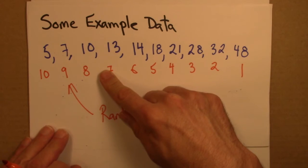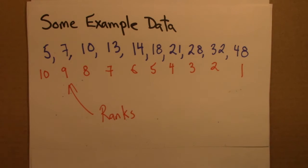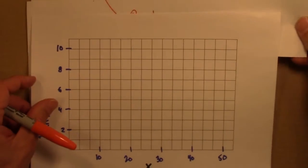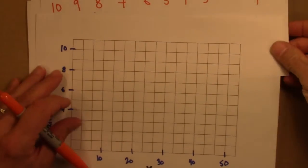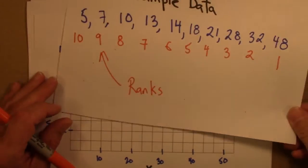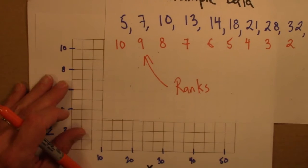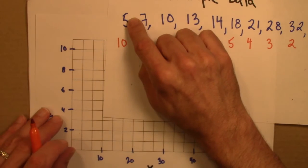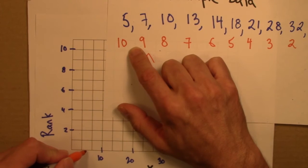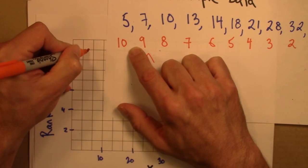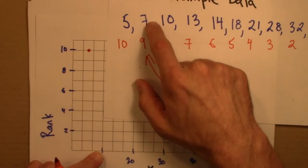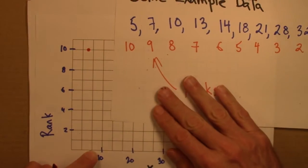So now let's plot these ranks against the x value. So the data point 5 has a Rank of 10. So 5, I go over here to 10. The data point 7 has a Rank of 9.